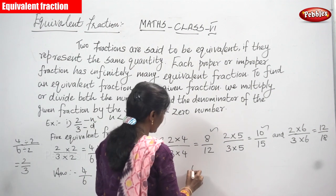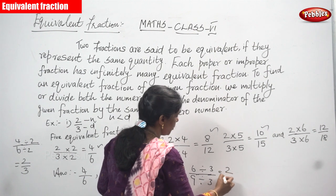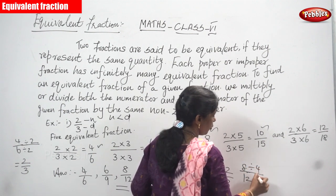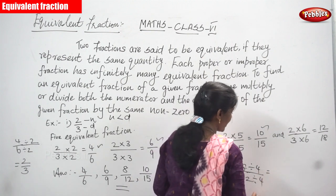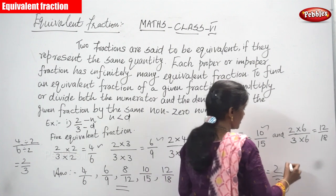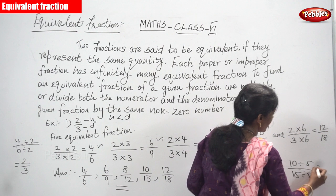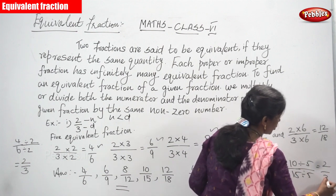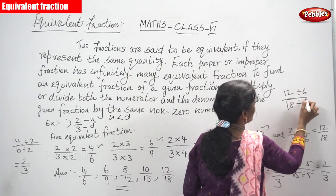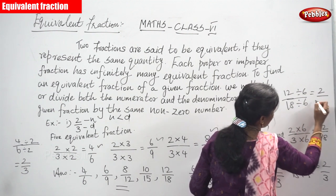Now using the division method for verification: 6 by 9 divided by 3 gives 2 by 3 again. 8 by 12 — both numerator and denominator divided by 4: 8 divided by 4 gives 2, and 12 divided by 4 gives 3. So you get 2 by 3 again. Similarly, 10 by 15 divided by 5 gives 10 ÷ 5 = 2 and 15 ÷ 5 = 3, giving 2 by 3. And 12 by 18 divided by 6: 12 ÷ 6 = 2 and 18 ÷ 6 = 3.